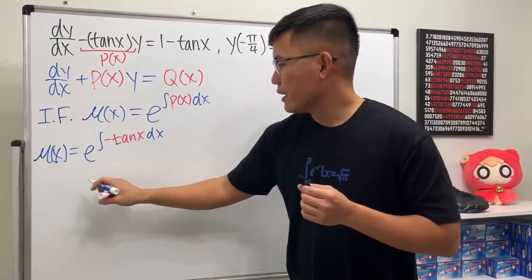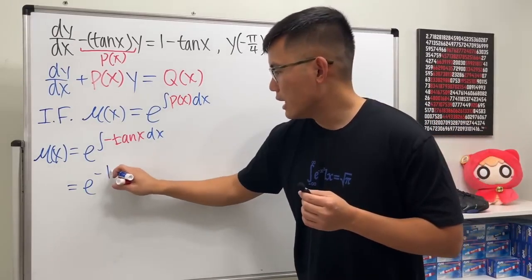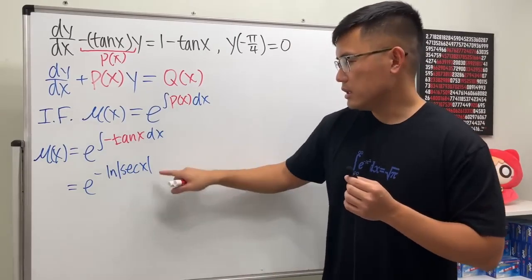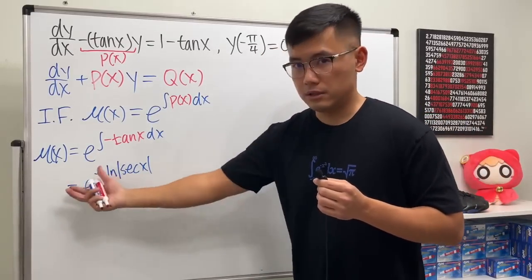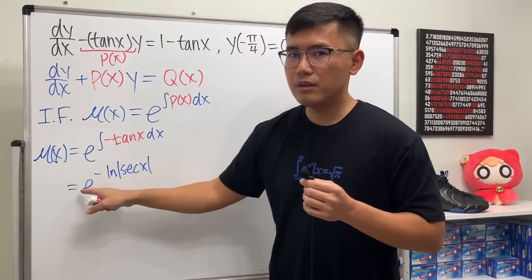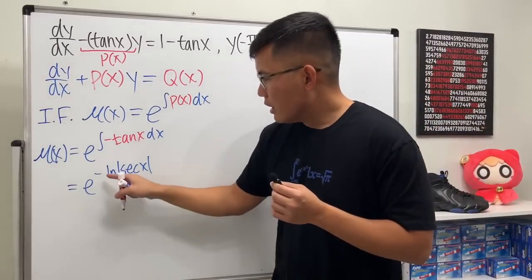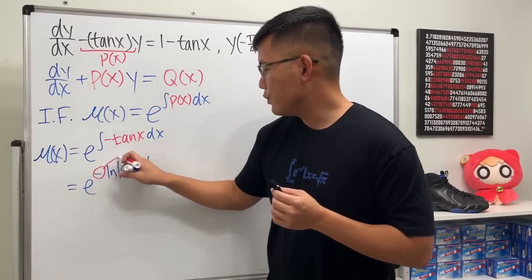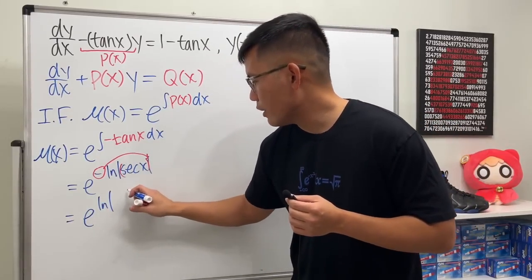This gives us e to the negative integral of tangent x dx. The integral of tangent x is ln of the absolute value of secant x. You don't need a plus C here because if you do include one, it becomes a coefficient that you can later divide out. So we have e to the negative ln|sec x|, which we can write as e to the ln|sec x| to the negative one power.